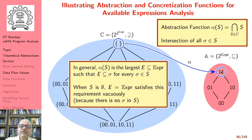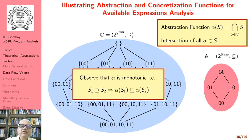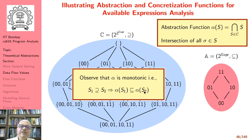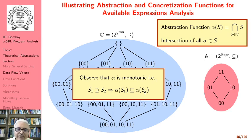Observe that the abstraction function is monotonic. If S1 is a superset of S2, then alpha(S1) is weaker than alpha(S2). The more states we supply, the more likely we are to get a weaker value, because more expressions are likely to be unavailable.